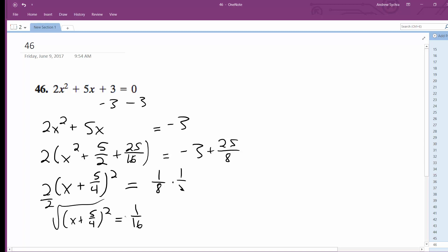It takes the square root of both sides. What we're left with here is x plus 5 over 4 equals plus or minus 1 over 4.